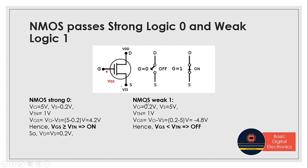Now let's see how NMOS passes weak logic 1. Let VG = 0.2 V — since VDD can never be 0, VG is a small positive value — and VS = 5 V (logic 1 that we are trying to pass). With threshold voltage VTN = 1 V, VGS = VG − VS = 0.2 − 5 = −4.8 V. Since −4.8 V is less than 1 V, VGS is less than VTN — meaning at low input voltage an open circuit is created between drain and source, and no current flows.